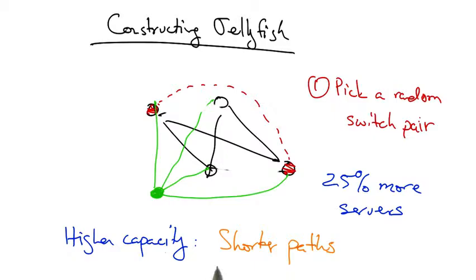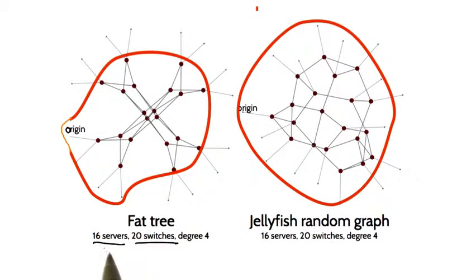This higher capacity is achieved because the paths through the topology are shorter than they would be in a fat tree topology. Consider a topology with 16 servers, 20 switches, and a fixed degree of 4 for both the fat tree topology and the jellyfish random graph.